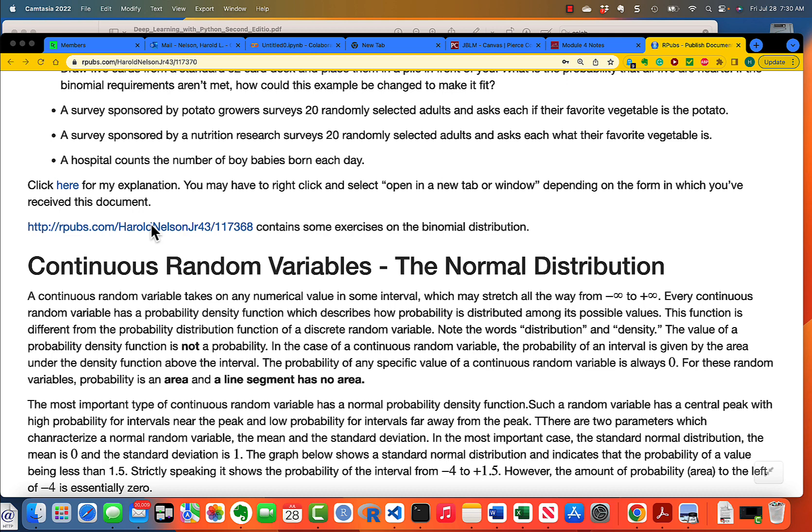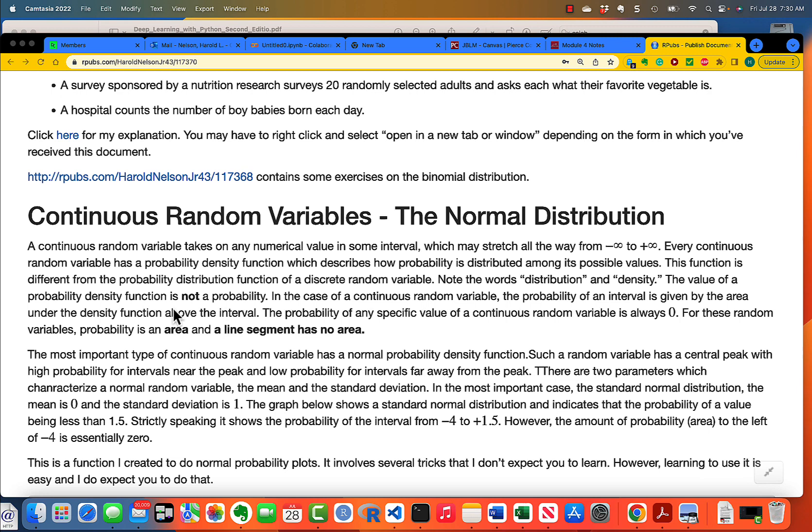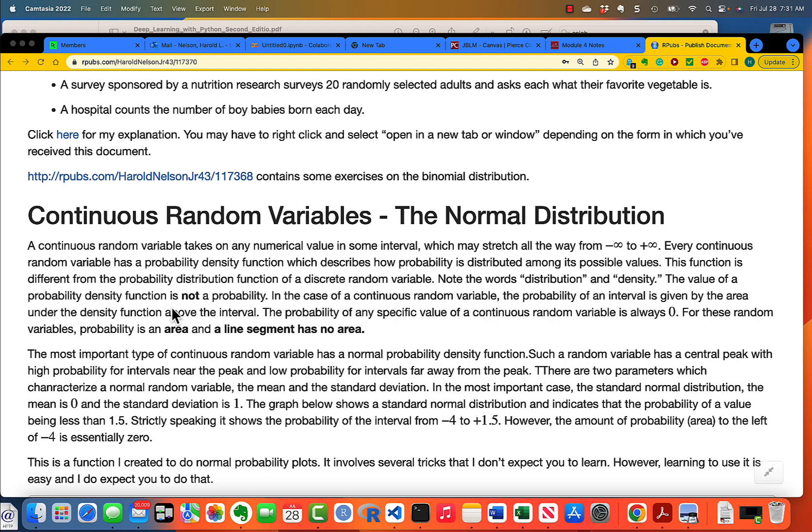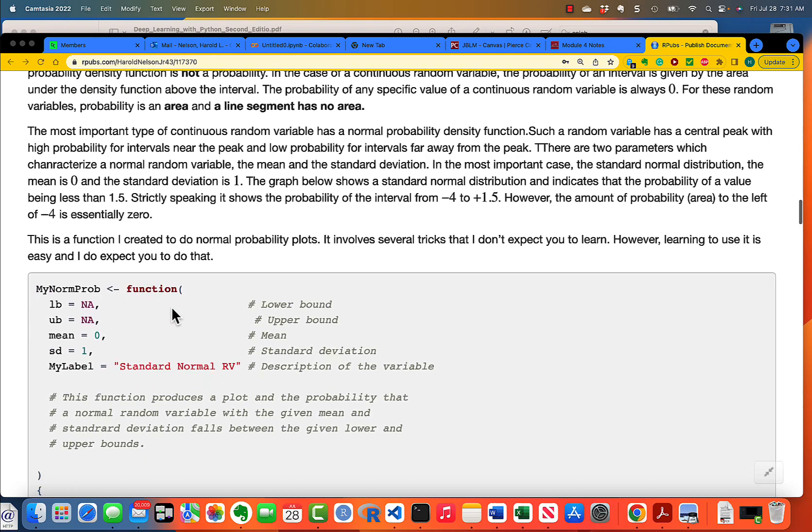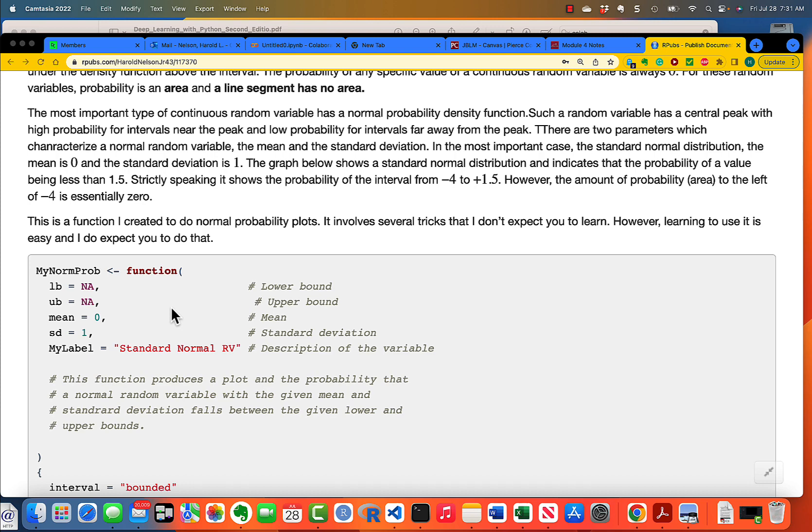Now we come to continuous random variables. And the most famous continuous random variable is the normal distribution. And for a normal distribution, to calculate a probability, you have to be talking about the probability that the number falls within an interval. The probability that the number takes on a specific value, like a point value, like 0.1 or 0.3 or 0.4, is zero because you have to have an area, and a line segment has no area. And I've got here a function, which I've written up, which will actually show you what you're doing when you calculate a normal probability.